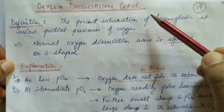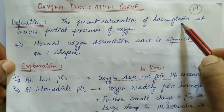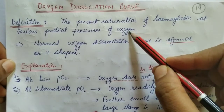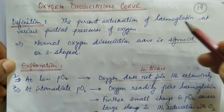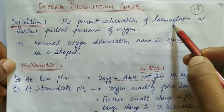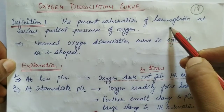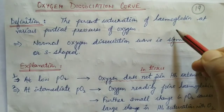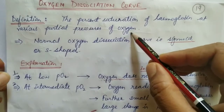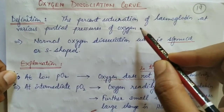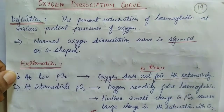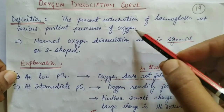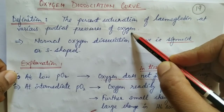Oxygen dissociation curve means how much percent of hemoglobin is saturated with oxygen at different partial pressures. Different partial pressures — like PO2 is 20, PO2 is 50, or PO2 is 95 — so when we take different partial pressures of oxygen, at that time how much hemoglobin will be present and how much will be saturated with oxygen.